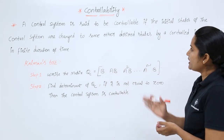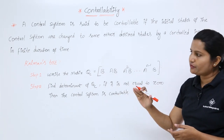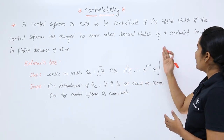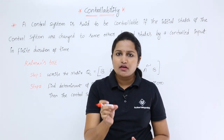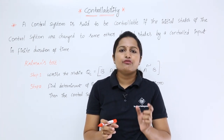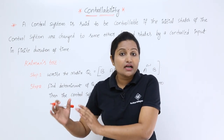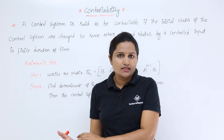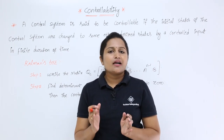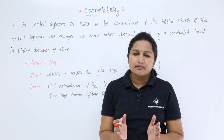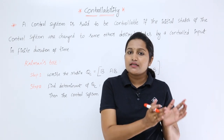A control system is said to be controllable if the initial states of the control system are changed or transferred to some other desired state by a controlled input in a finite duration of time. If you are changing your initial state to your desired state using your control input within a particular timeline, that is called controllability. If that is possible, we say the system is controllable.